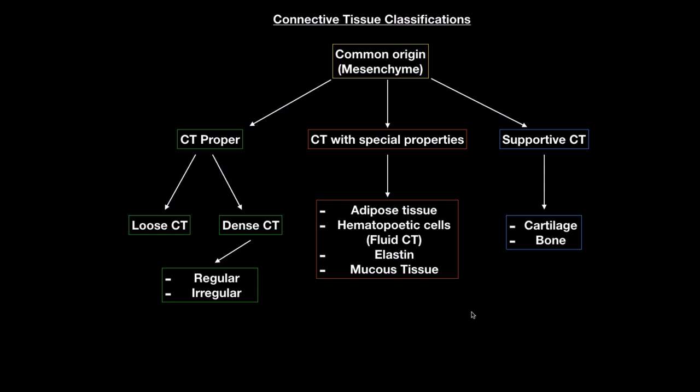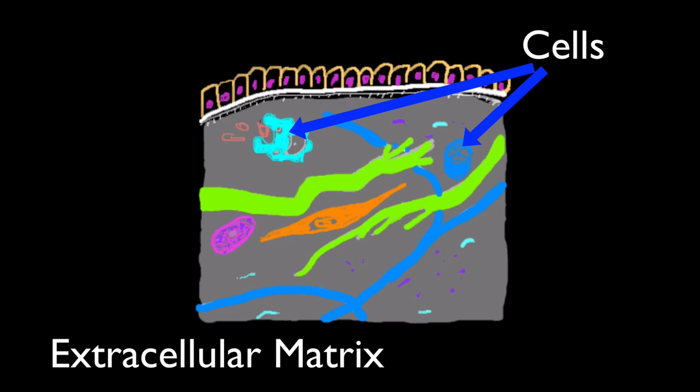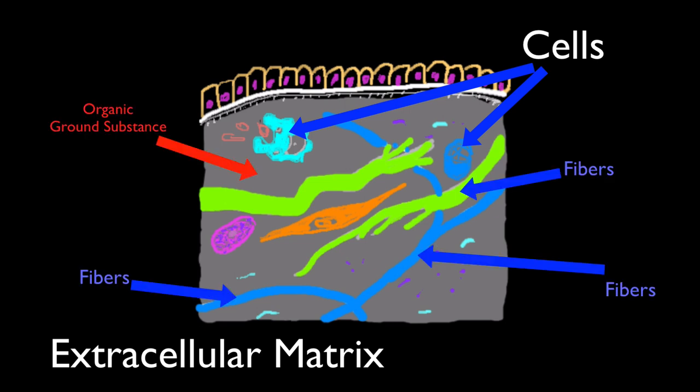Connective tissue is not just simple connective cells — it's very important. It provides and maintains the form of the body, binds structures together, and provides mechanical support. It also supports metabolic defense, transport, and storage processes, as well as wound repair and inflammatory responses. Connective tissue is made up of cells and an extracellular matrix consisting of fibers, organic ground substance found between cells and fibers, and fluid in which cells and fibers are suspended.